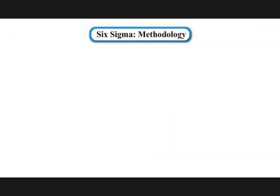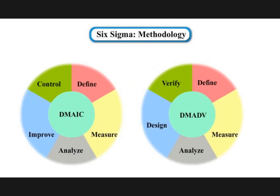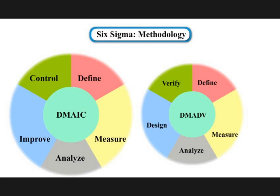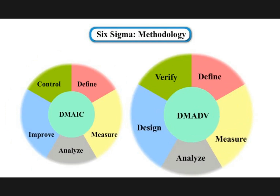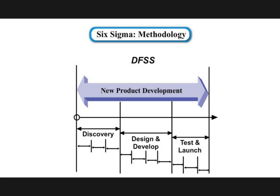Six Sigma Methodology: Six Sigma has two key methodologies — DMAIC and DMADV. Design for Six Sigma (DFSS) is the act of designing a product, process, or service resulting in a Six Sigma, virtually defect-free output. Let's understand the concept of Six Sigma methodology with the help of a video lecture.